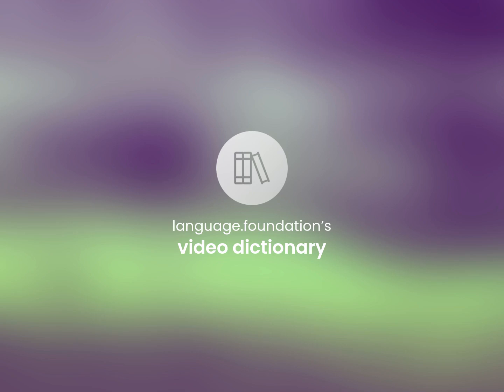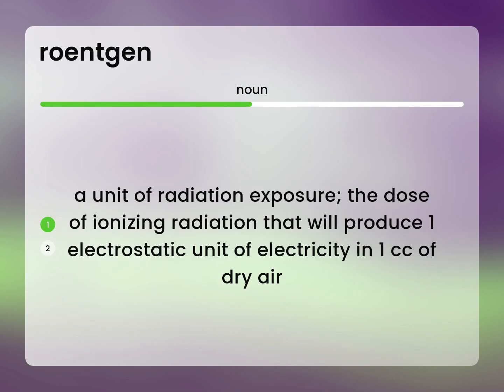Language.Foundation's Video Dictionary, helping you achieve understanding. A unit of radiation exposure: the dose of ionizing radiation that will produce one electrostatic unit of electricity in one cc of dry air.